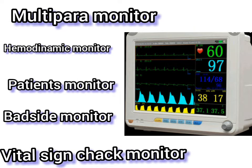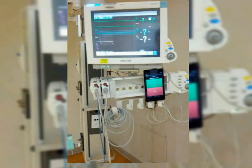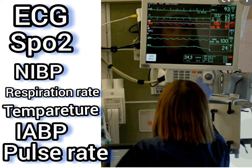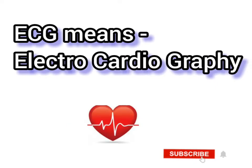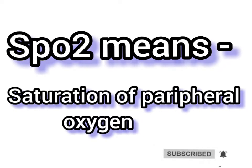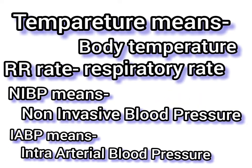The first and most important ICU instrument is the multi-para monitor, also called the hemodynamic monitor or patient monitor. It checks all vital signs: ECG, SpO2 (saturation of peripheral oxygen), NIBP, pulse rate, respiratory rate, temperature, and both non-invasive and invasive blood pressure.